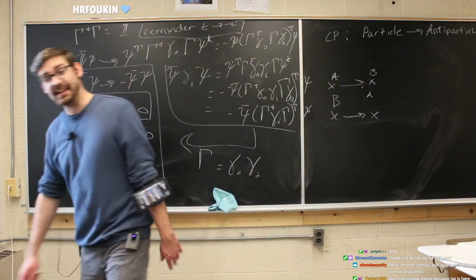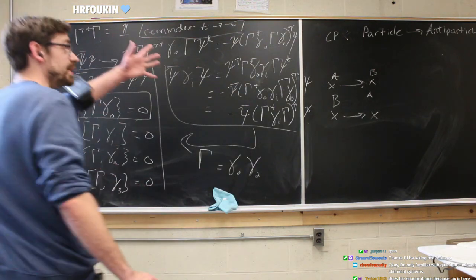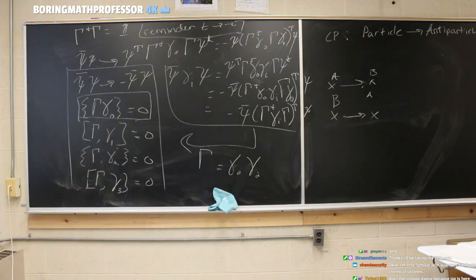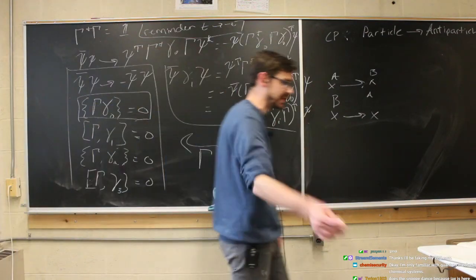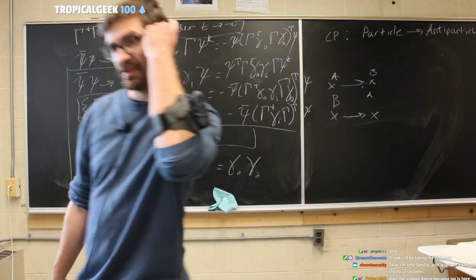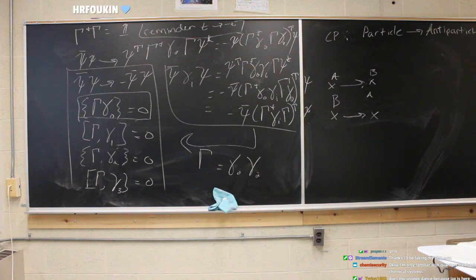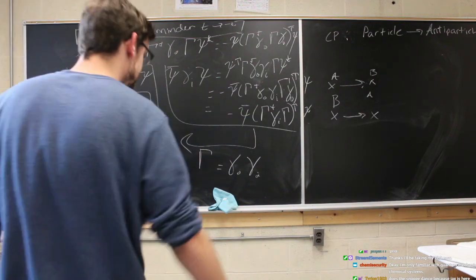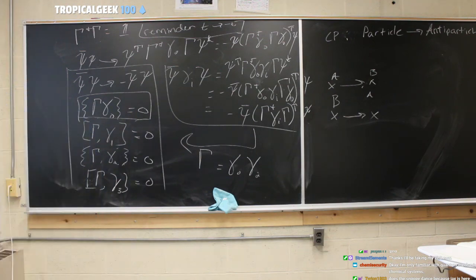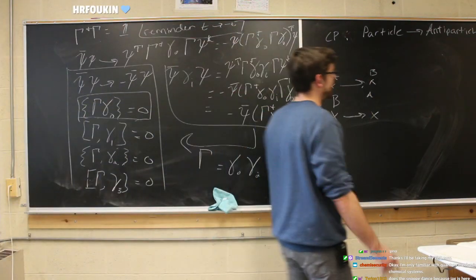What happens if you apply CP and then T? Well, you go from particle to antiparticle and then back to a particle again. In the business, we call that trivial. We don't want to go from a particle to an antiparticle back to a particle — we want to go from a particle to a particle backwards in time, skipping the antiparticle.